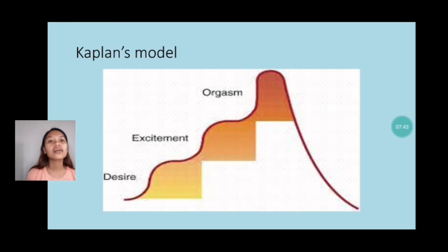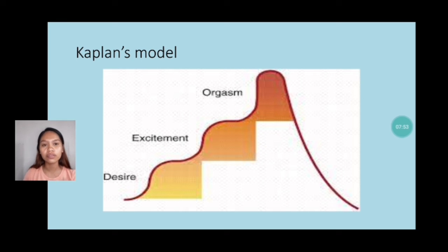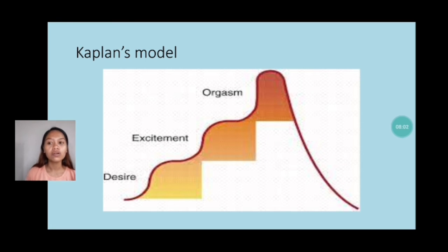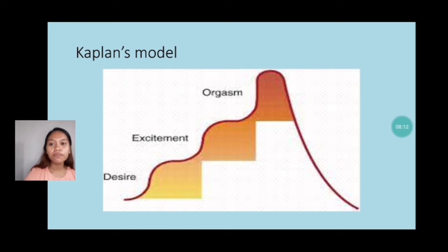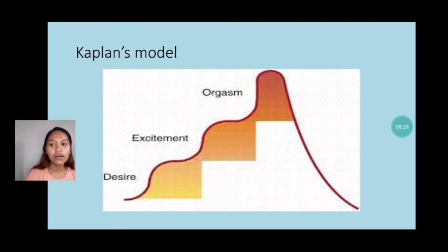Next is the Kaplan model. Helen Singer Kaplan described three stages of sexual response: desire, excitement, and orgasm. The Sexual Health Network (2004) states that the inclusion of desire as part of the human sexual response cycle leads to consideration of psychological and physical factors that may impact sexual desire. Some people who have no desire prior to beginning a sexual encounter will develop desire once the experience has begun, and may participate in the sexual experience for a variety of reasons, including love for the partner.